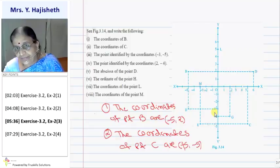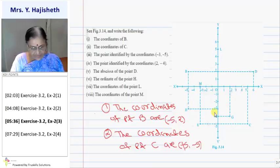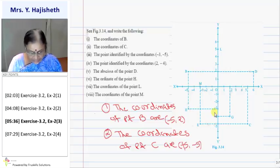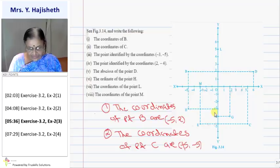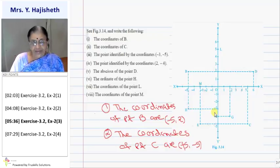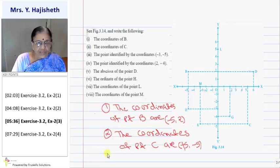In the figure, B is in the second quadrant, D is in the first quadrant, H and E are in the third quadrant, and G and C are in the fourth quadrant, and M is on the x-axis. The point identified by the coordinates (−3, −5) is point E.